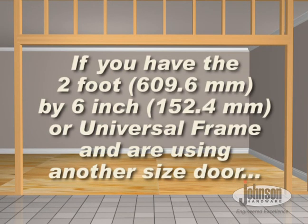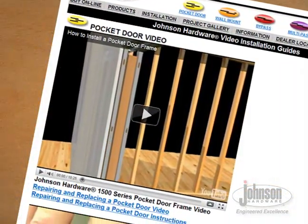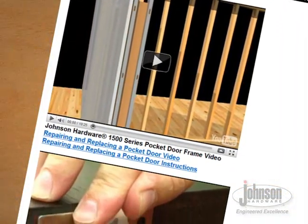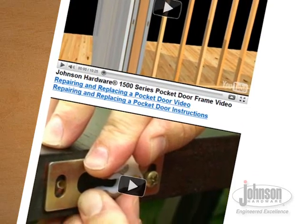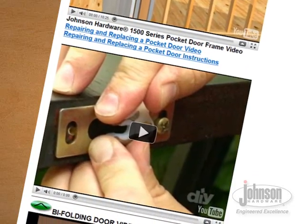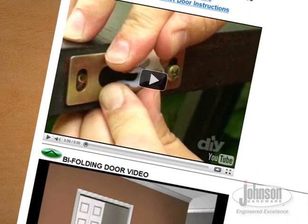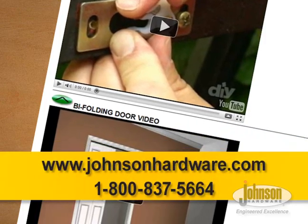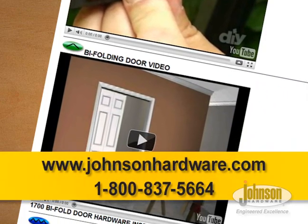If you have the 2 foot by 6 inch or universal frame and are using another size door, please see cutting instructions in the 1500 series pocket door frame installation video or our installation instructions page located on our website www.johnsonhardware.com